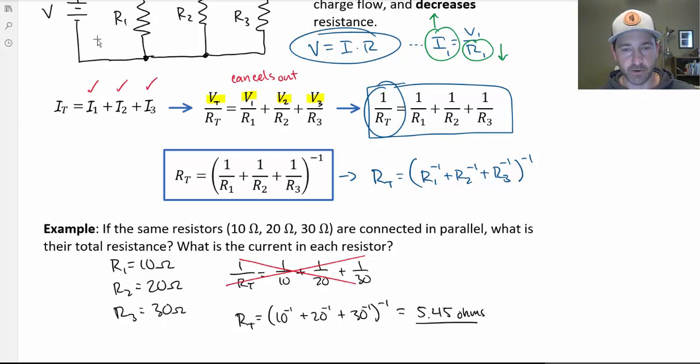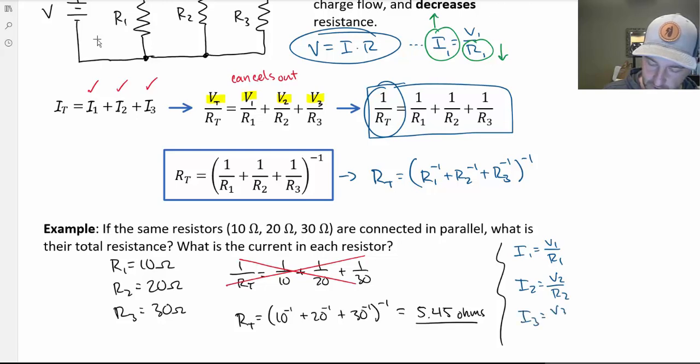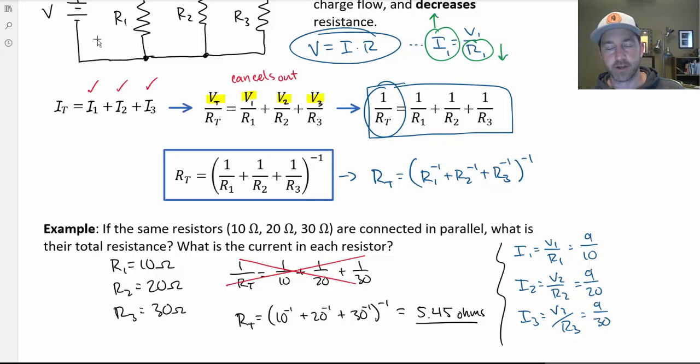Now the second part of that: what is the current in each resistor? We can calculate that using I1 equals V1 over R1, I2 equals V2 over R2, and I3 equals V3 over R3. Now the catch is all those voltages are the same. So you'd have 9 over 10, 9 over 20, and 9 over 30. Go ahead and calculate those and see what you get.